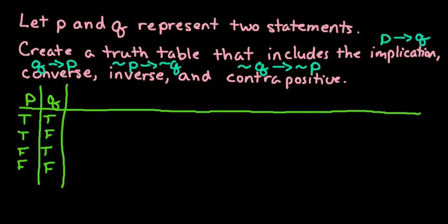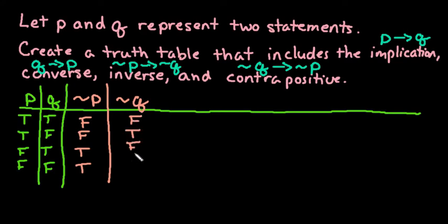I'm also going to create, because some of these contain the negation or the complement of the statement, I'm going to create a not P column. This tilde means not. It's called the negation sometimes. It's called the complement sometimes. We call things a lot of different terms in math to make it more confusing. So not P is the opposite of P. So I would have false, false, true, true. And then I'm going to add a not Q column. And this one would be false, true, false, true.